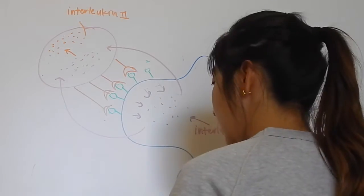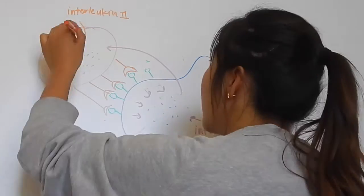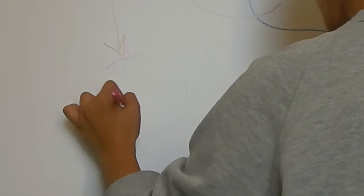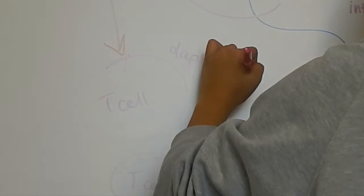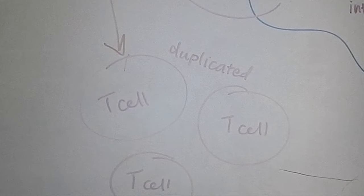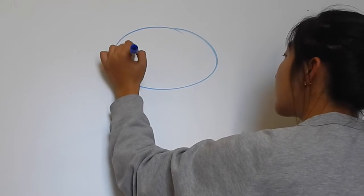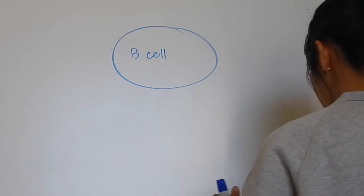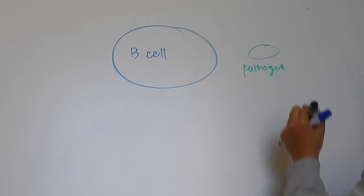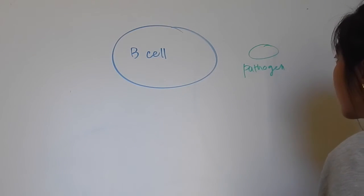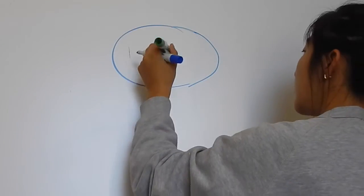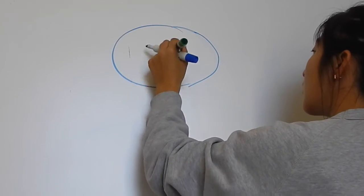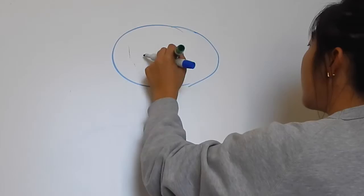Interleukin-2 stimulates the division of T cells into multiple clones. The second stage of this response begins when a B cell encounters a pathogen. The B cell will then engulf the pathogen, digest it, and present its antigens on its surface.